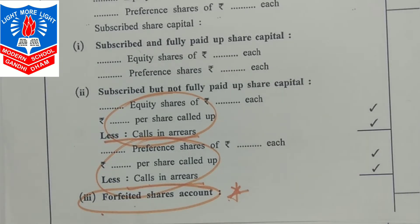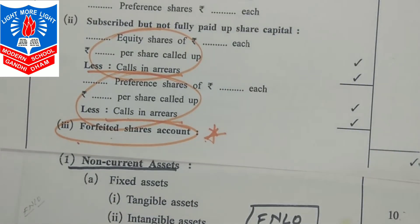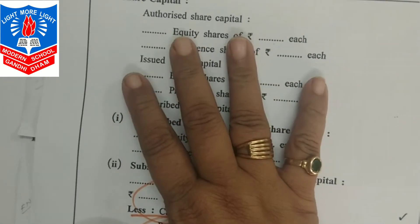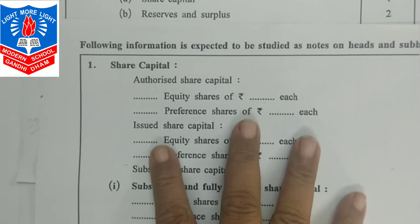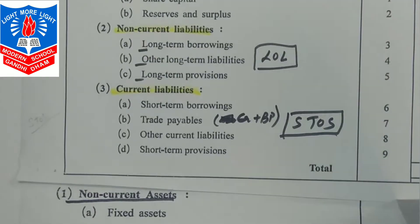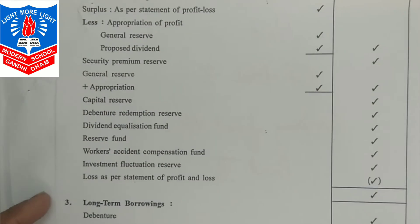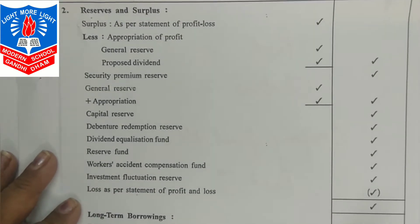Let us continue with details. After share capital, the next sub-heading in the balance sheet is reserves and surpluses — number 2 sub-heading. Let us get details about reserves and surpluses.